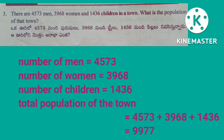Solution: Number of men is 4,573. Number of women is 3,968. Number of children is 1,436. Therefore, total population of the town is 4,573 plus 3,968 plus 1,436, that is equals to 9,977.